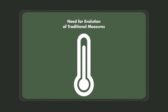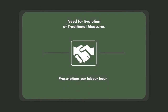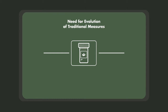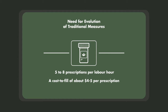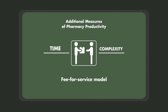Let's look at concept number two: traditional measures of pharmacy productivity need to evolve. The traditional pharmacy business model was entirely transaction-based. Dispensary productivity was assessed using measures such as scripts per labor hour or wage cost per script. A typical pharmacy would be deemed productive if it achieved between five to eight scripts per labor hour or a cost to fill of about four or five dollars per script. Unfortunately, these productivity measures do not apply very well to a service-based model. Most clinical services are reimbursed according to a fee-for-service model, with fees dependent on the time required and the complexity of the program. Pharmacy managers will find it difficult to evaluate the return on investment of these clinical programs if they rely on antiquated productivity measures.